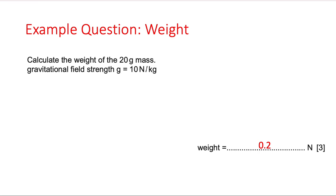I've given you the answer here—didn't really mean to do that, I'll make sure that comes off in the following videos. However, I want to talk about how we get that answer. Now this is taken from a recent past paper. I always encourage students to look at the number of marks. In this case, this is a three mark question and on the surface of it is a fairly simple one. We're being asked to calculate the weight of a 20 gram mass, and we're told the gravitational field strength g is equal to 10 newtons per kilogram.